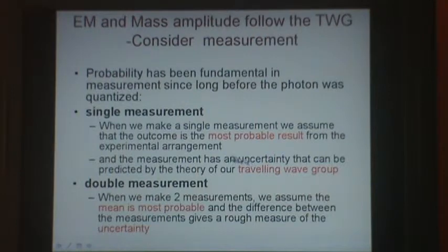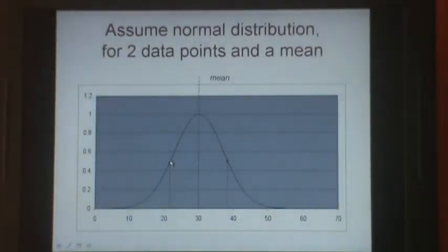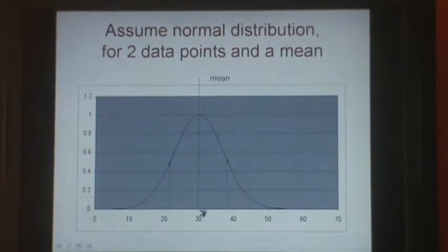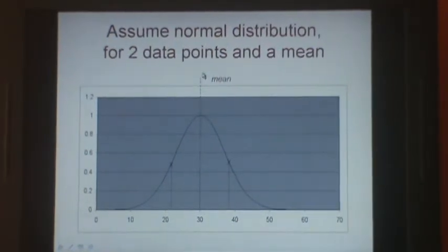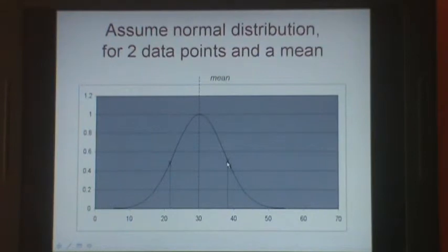When we make a double measurement, we have two measurements, and we assume that the most probable result is the mean of those two measurements, and the difference of two measurements is a rough estimate of the uncertainty of those measurements.